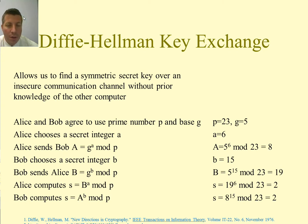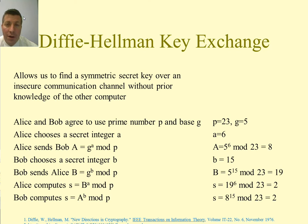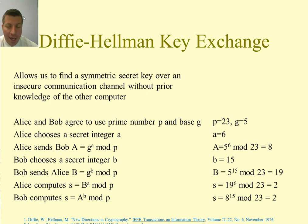Alice and Bob want to communicate using a symmetric key algorithm. They agree to use a prime number p and a base g — these are public numbers, so anyone along the way can know them. Alice then chooses a secret integer a, which she keeps secret, and sends Bob the value A = g^a mod p.